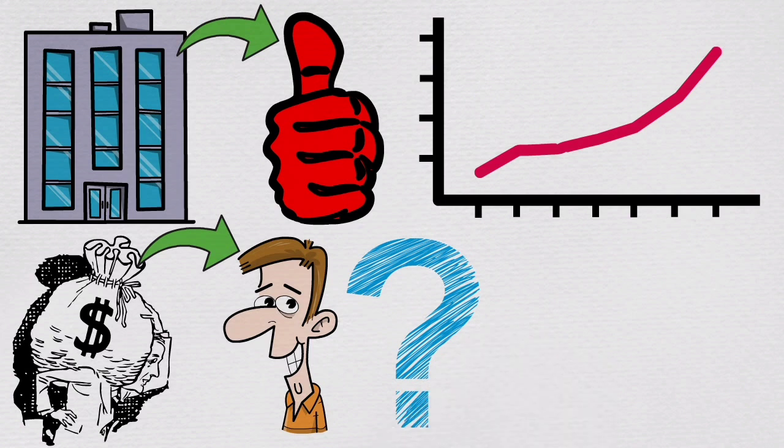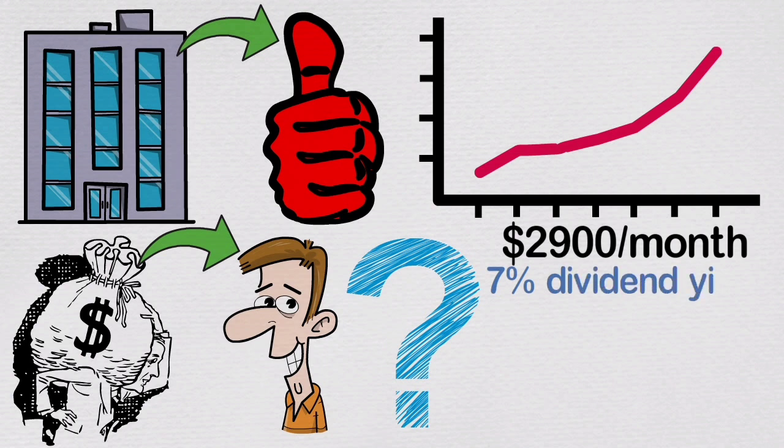So, how much money you need invested to reach your $2,900 per month goal. Let's calculate with the average of 7% dividend yield. In this case, investor needs to invest around $500,000 to meet his goal.